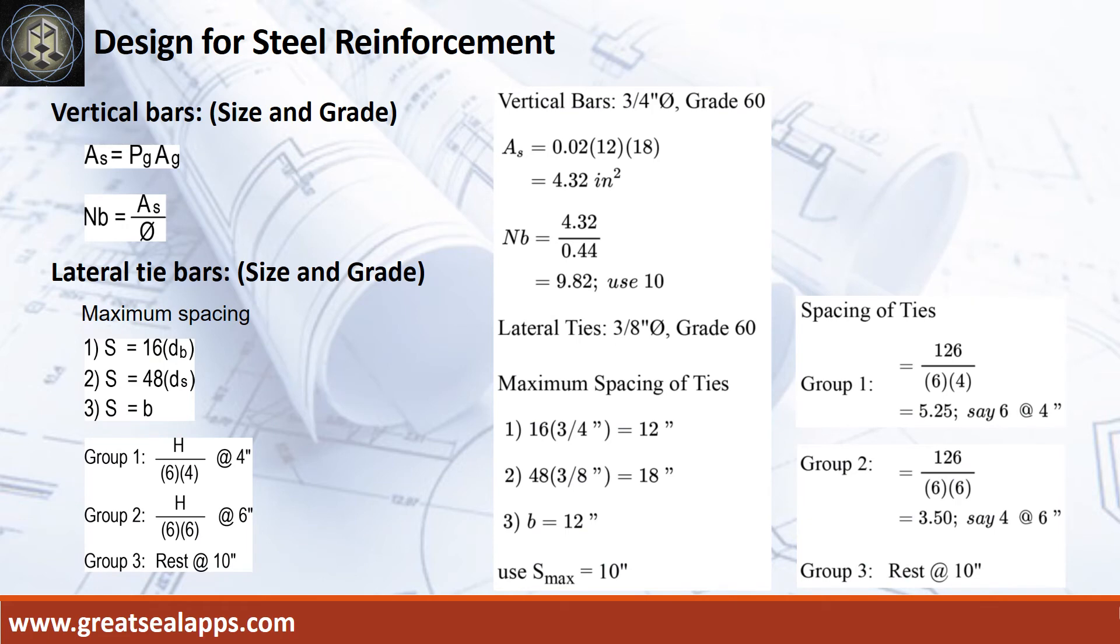Given steel ratio of 2%, column width equals 12 inches, and column length equals 18 inches. The area of steel for vertical bars is 4.32 square inches. The number of bars for 3/4 inch diameter is 10.